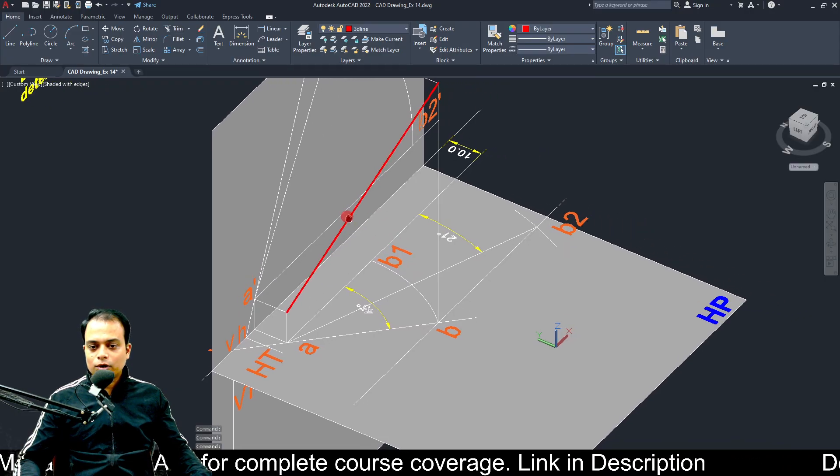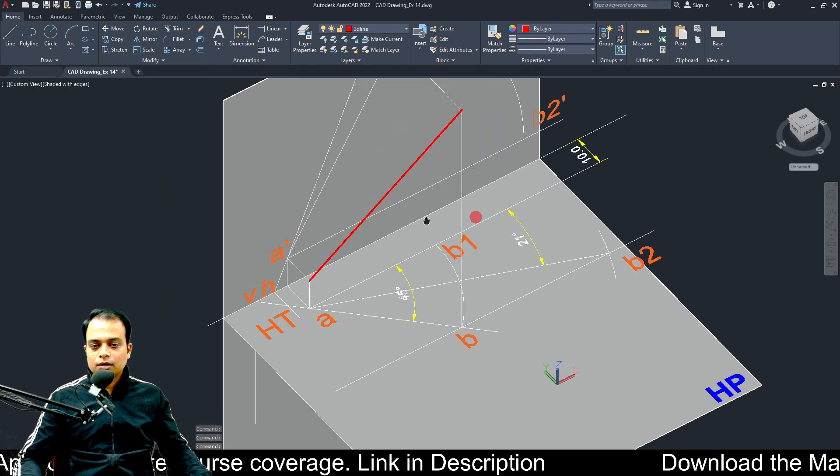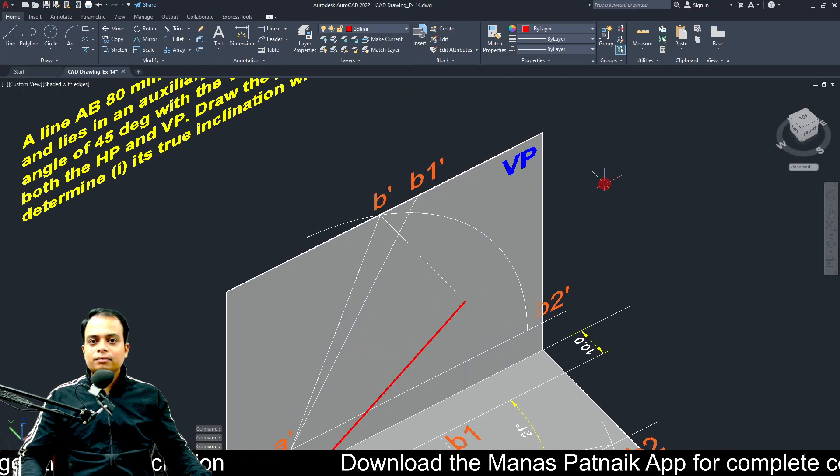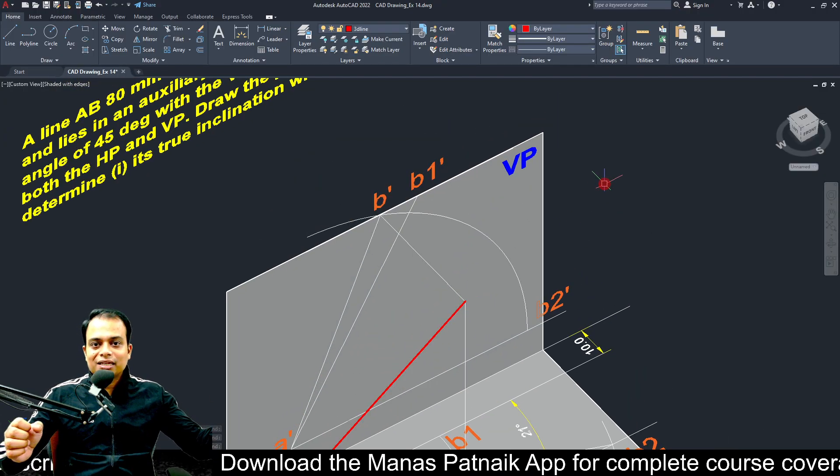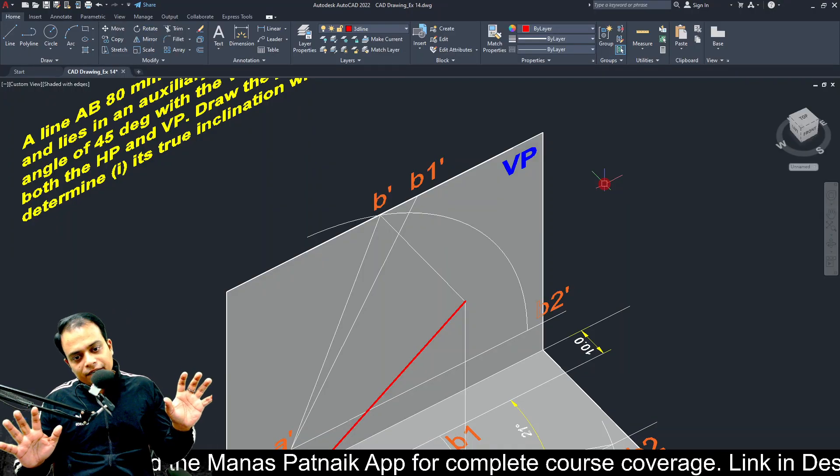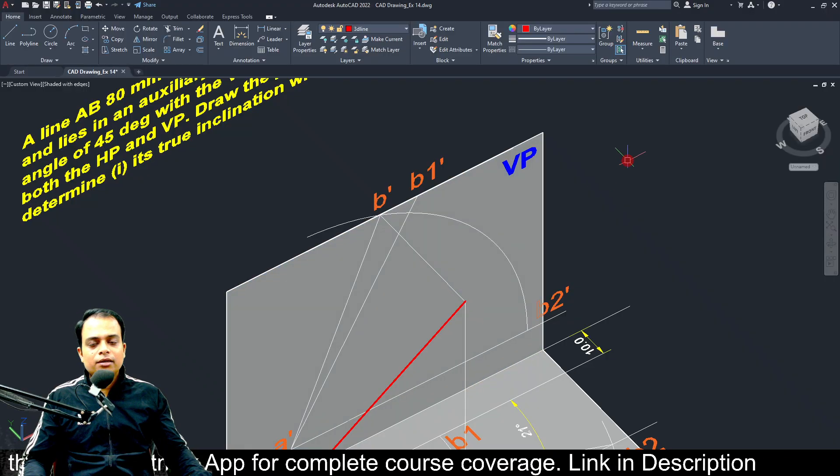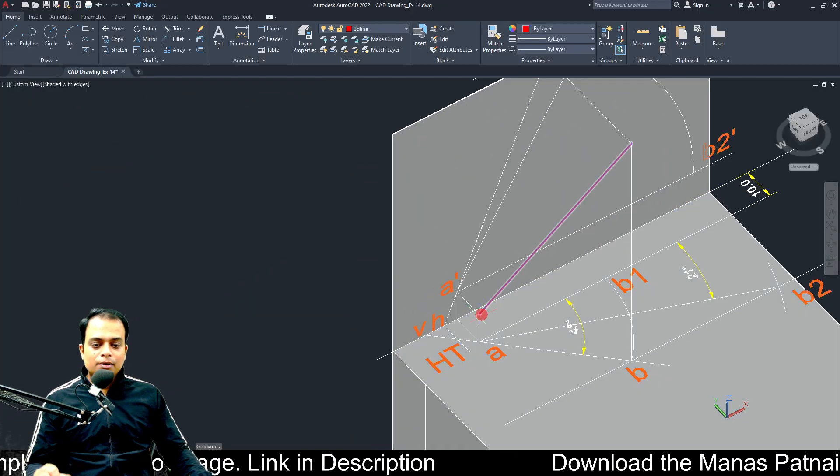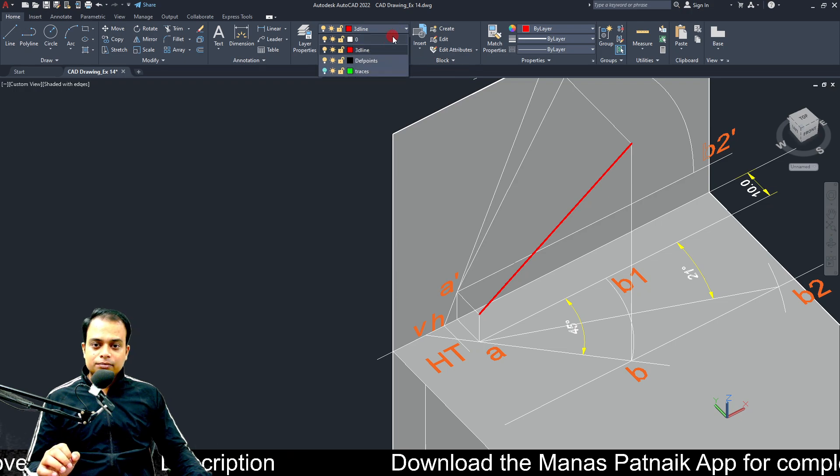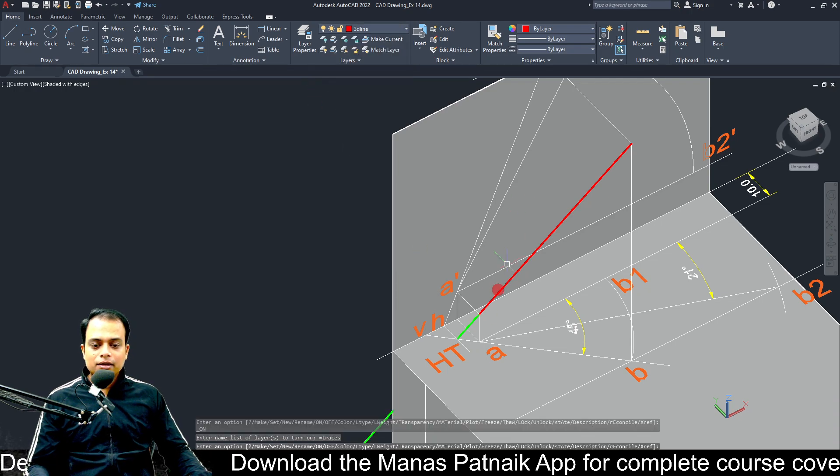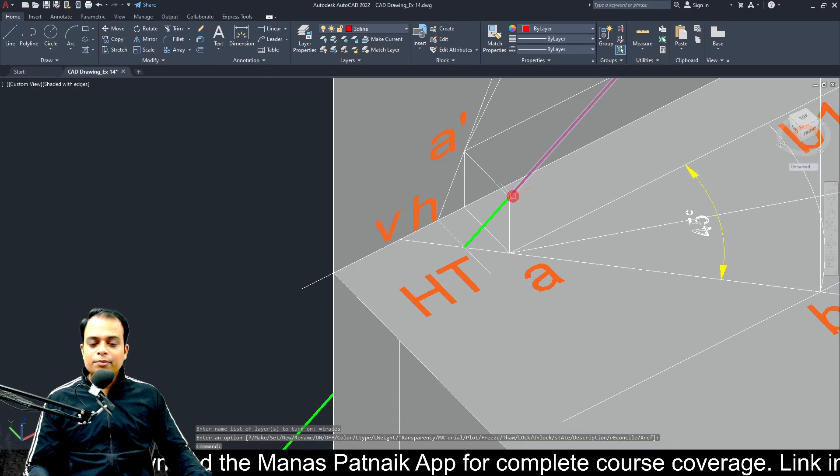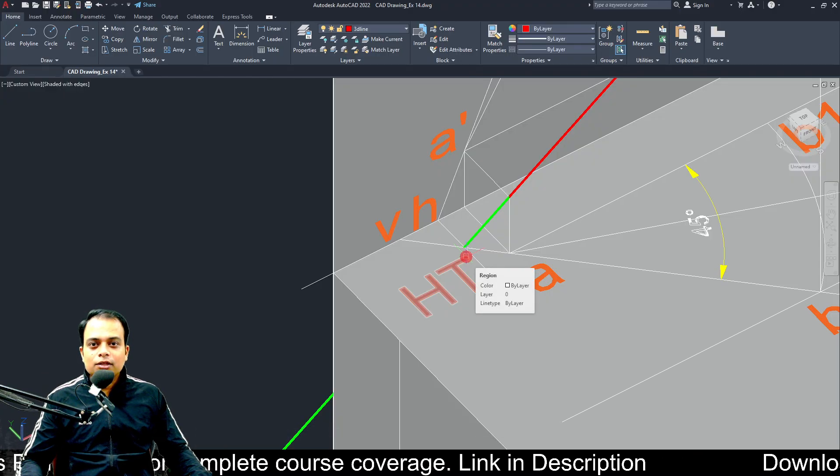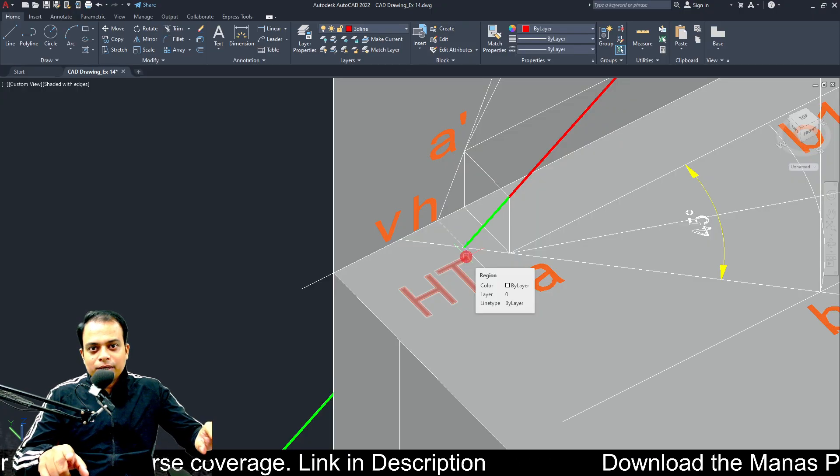Now, I was talking about traces. What exactly is a trace? This is the end A of the line. That's the end B of the line. If the line is produced beyond end B, it is not going to intersect VP or HP. Agreed? I mean, if you produce this line beyond this point B, it is not going to intersect any principal plane. However, if you produce this line or extend this line beyond this point A in this direction, what you'll realize is on extending it beyond point A, it intersects the horizontal plane. And this intersection point is popularly known as the horizontal trace.